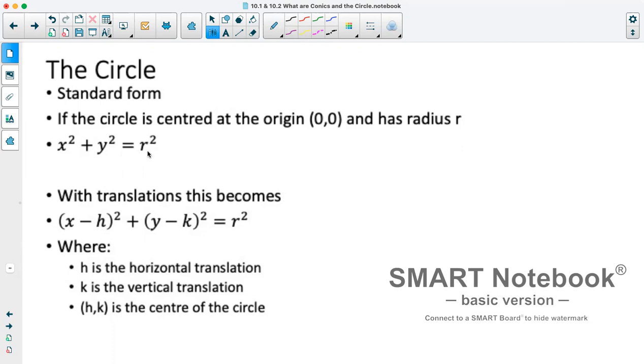Now as we found out from other graphs, we often have horizontal and vertical translations of graphs, which would mean that we could have it centered somewhere else. In which case, as usual, our h is our horizontal translation while k is our vertical translation.